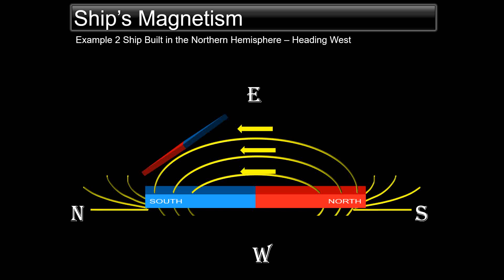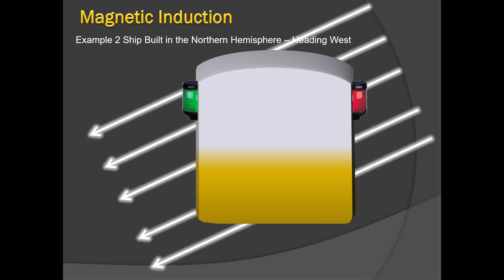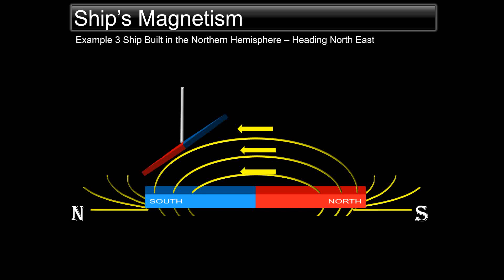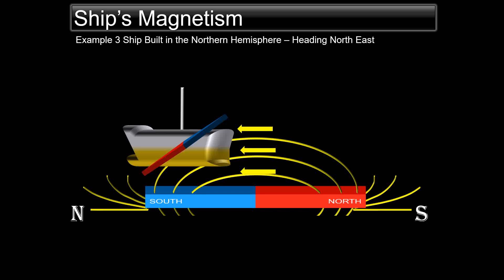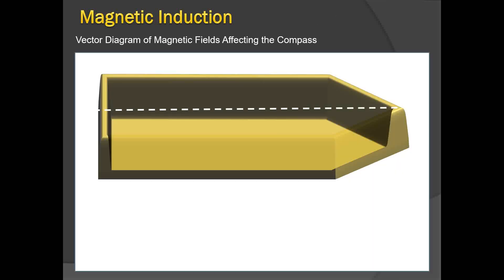A ship built in the northern hemisphere heading west will end up with her starboard side as the red side and port side as the blue side — like horizontal magnets with blue to port and vertical magnets with blue to the top. Finally, if a ship is built in the northern hemisphere heading northeast, the port side and forward portion become red and the starboard side and aft portion are blue. In all cases, the vessel's field acts like magnets lying fore-and-aft, athwartship, or vertically, with blue and red ends matching the vessel's poles as shown.